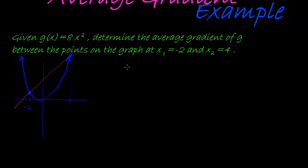Average gradient formula is, in this case we're working with g. So we have g(x₂) minus g(x₁) divided by x₂ minus x₁.